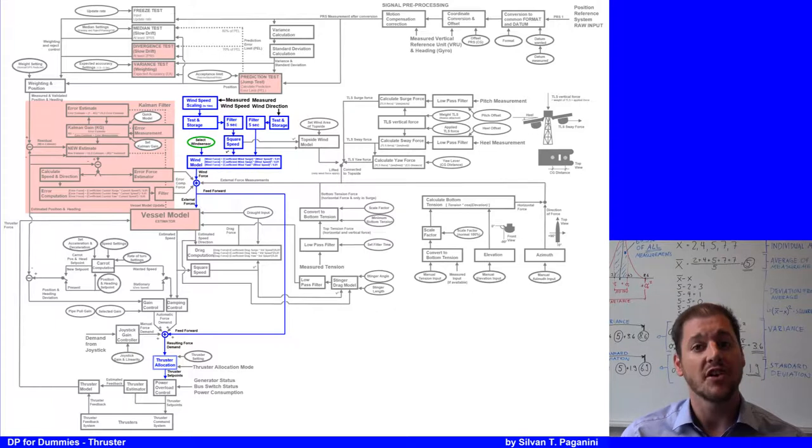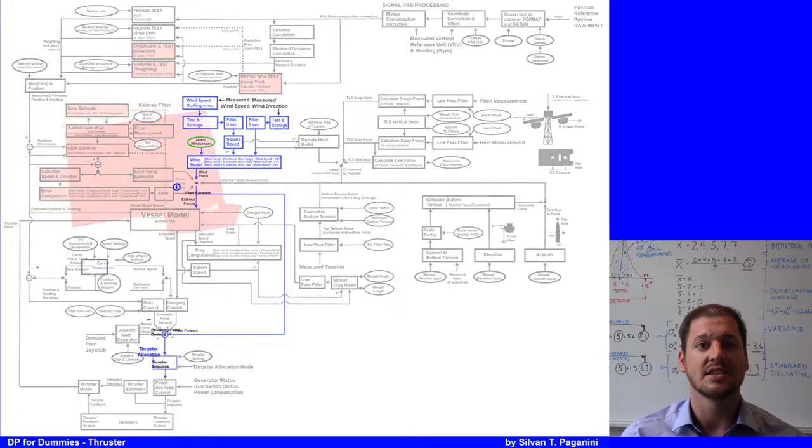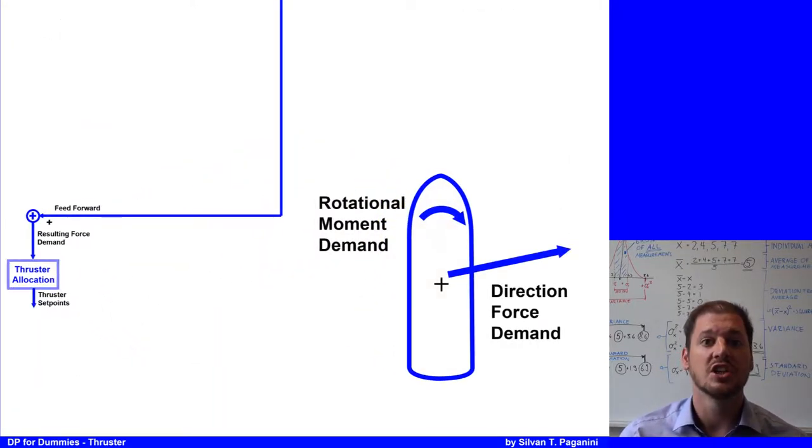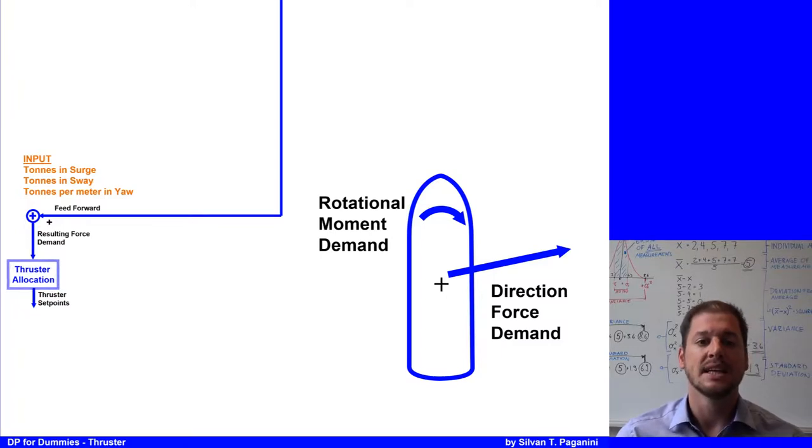The actuator's first job is the thruster allocation. There, the force amount in the three axes, surge, sway, and yaw, is coming in. The system knows where the thrusters are and if they are on or not and which are enabled. Further, it also knows which thruster modes are in.